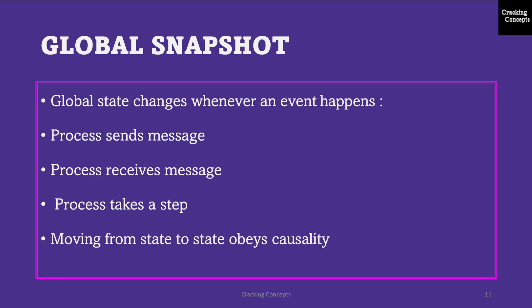A global state can change whenever an event happens — for example, when a process sends a message, when a process receives a message, or even when a process takes a step. Moving from state to state will obey the property of causality, which is also the causal precedence relation.